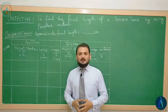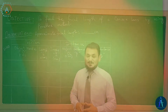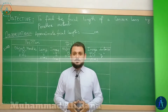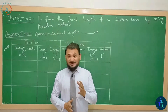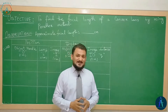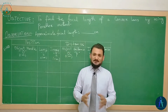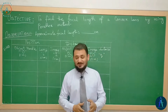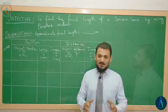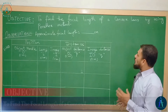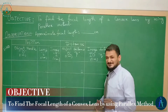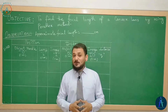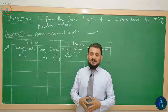Bismillahirrahmanirrahim, Assalamu Alaikum. This is Mohammad Ali Rana from Ulaman Abbas School. Today we are here with another video of Class 10 AKUEB practical. Today we have to find the focal length of our convex lens by using the parallax method.